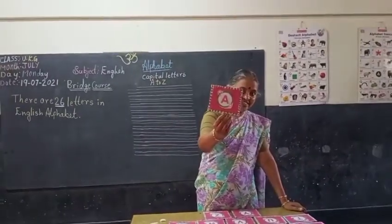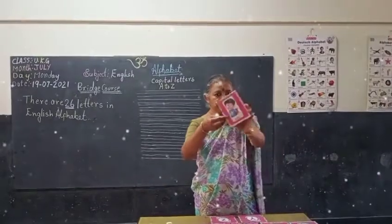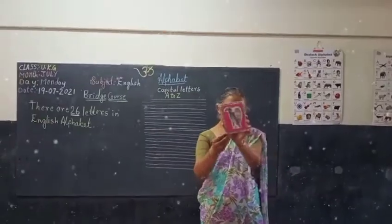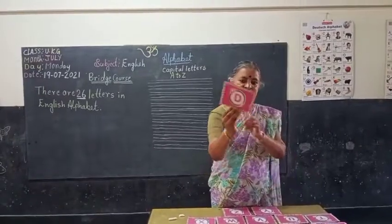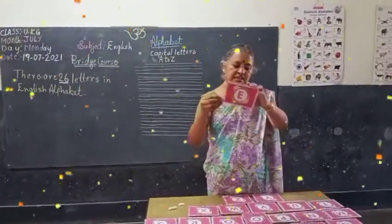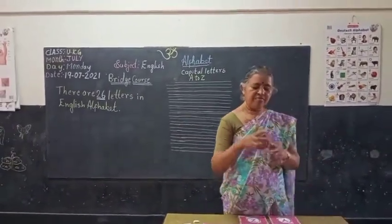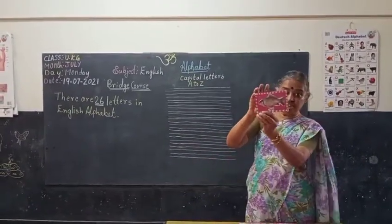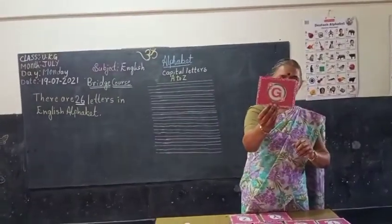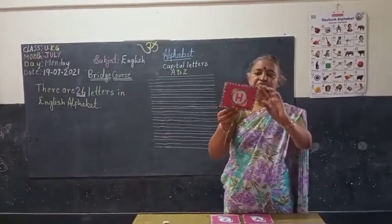See the flash card and say which letter this is. A for apple. B for boy. See the next letter — C for cat. See the next — D for dog. See the next letter — E for elephant.